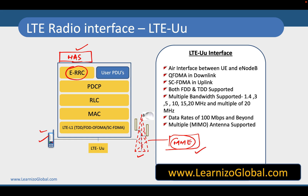To summarize the physical layer: we have OFDMA in the downlink and SC-FDMA (Single Carrier FDMA) in the uplink, and both FDD and TDD are supported by the network.